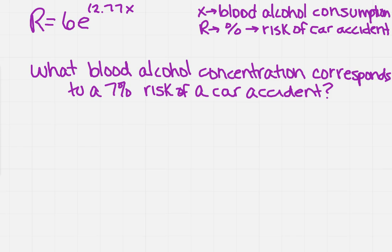So that's R equals 6e to the 12.77x and I've given you what the variables mean on the right hand side, so x is the blood alcohol consumption and R is the percent for risk of a car accident.